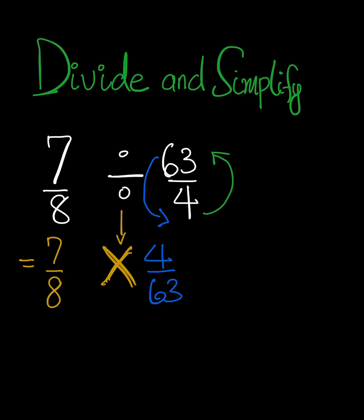To further simplify, we have 7 over 8 multiplied by 4 over 63. Now it's just multiplication of fractions, and we need to look for common factors.